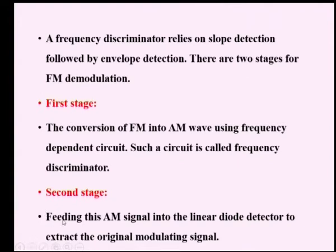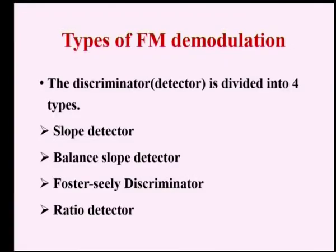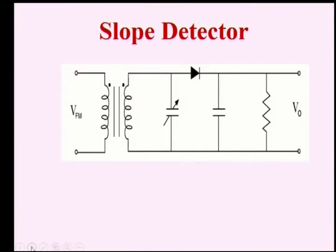The second stage is feeding this AM signal into a linear diode detector to extract the original modulating signal. As already seen, there are four types of demodulation: slope detector, balanced slope detector, Foster-Seeley discriminator, and ratio detector. First we will see the slope detector.